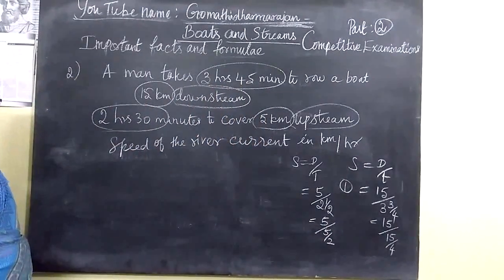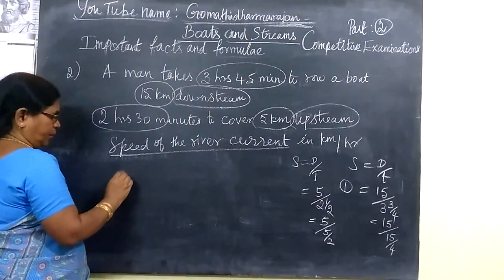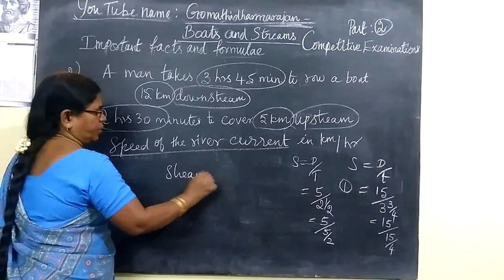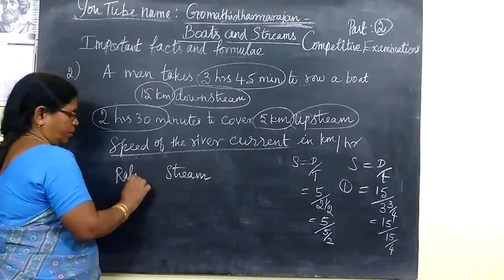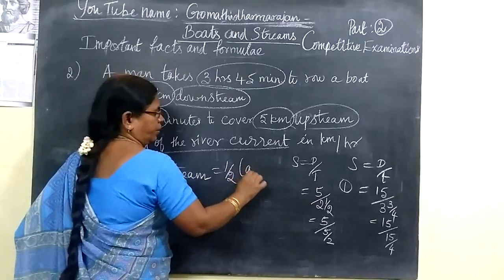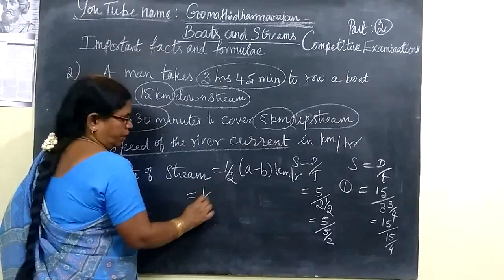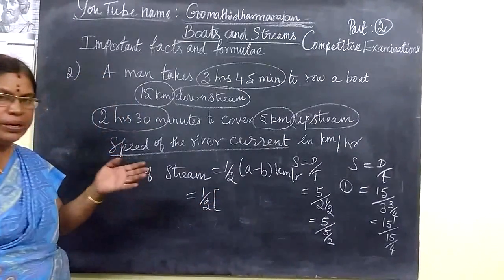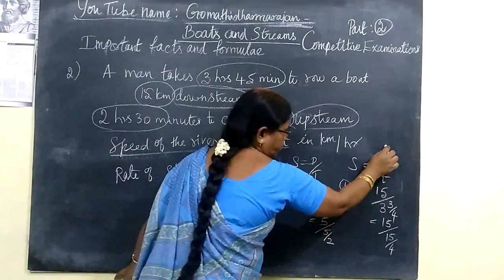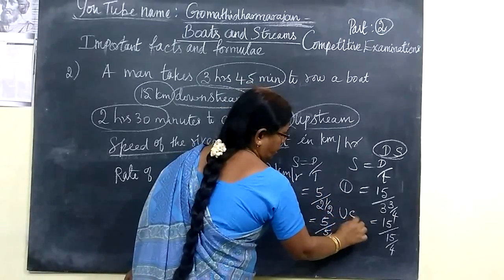So distance by time. Speed of the river current, that is nothing but stream. Rate of stream equal to half, A minus B, km per hour. Here A means speed of downstream, B means speed of upstream. This is downstream and this is upstream.